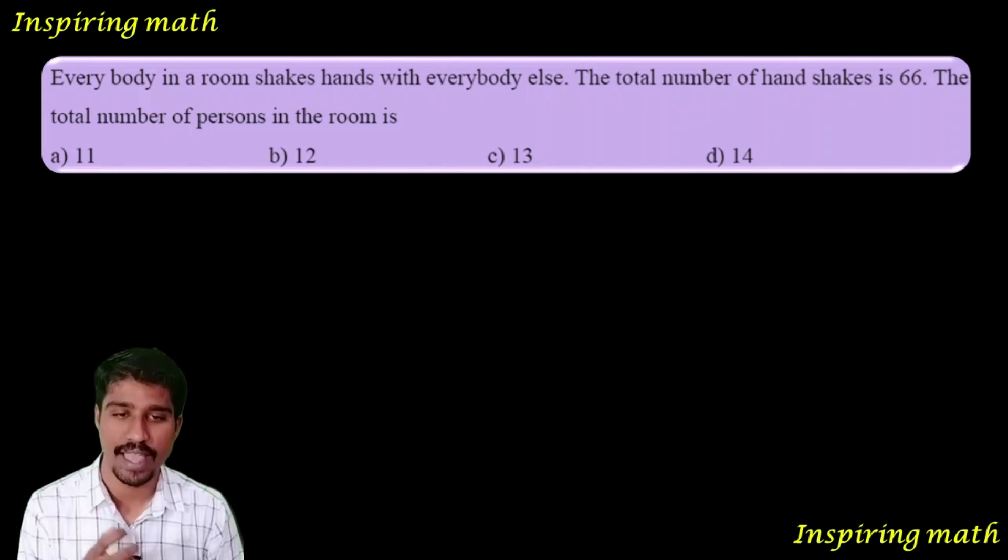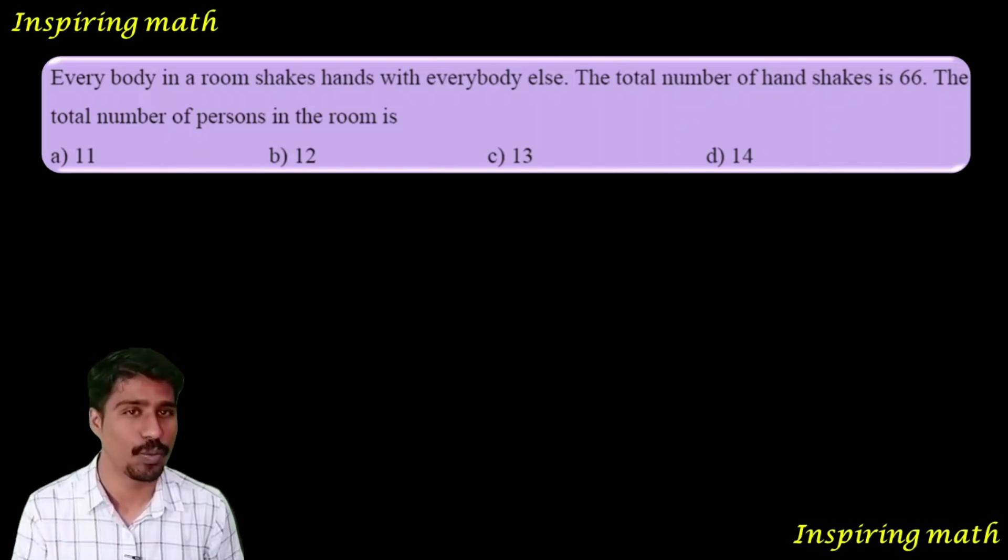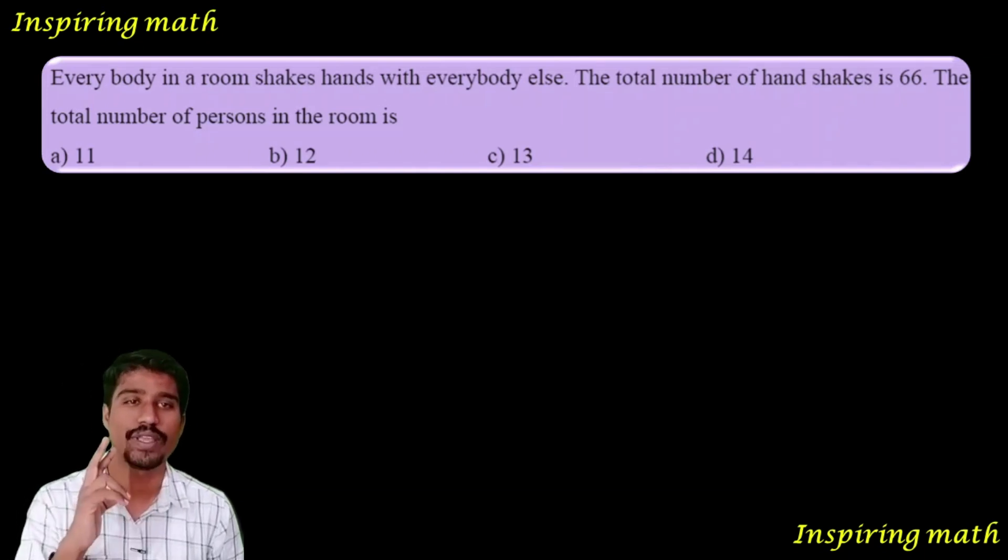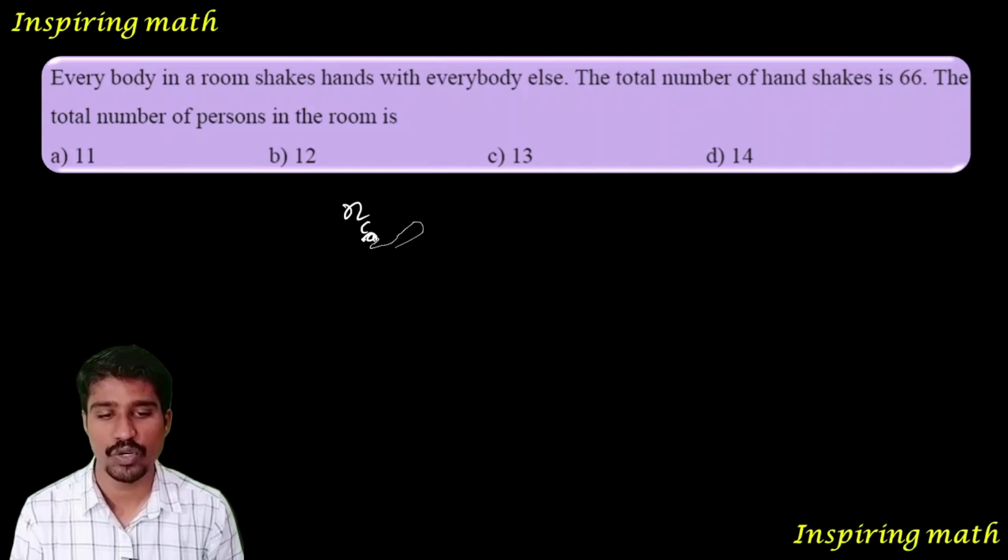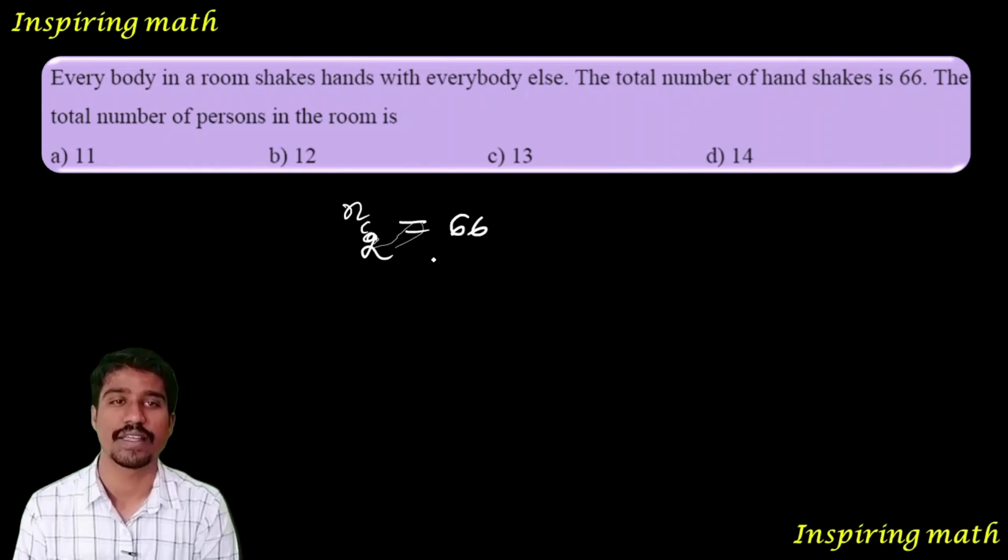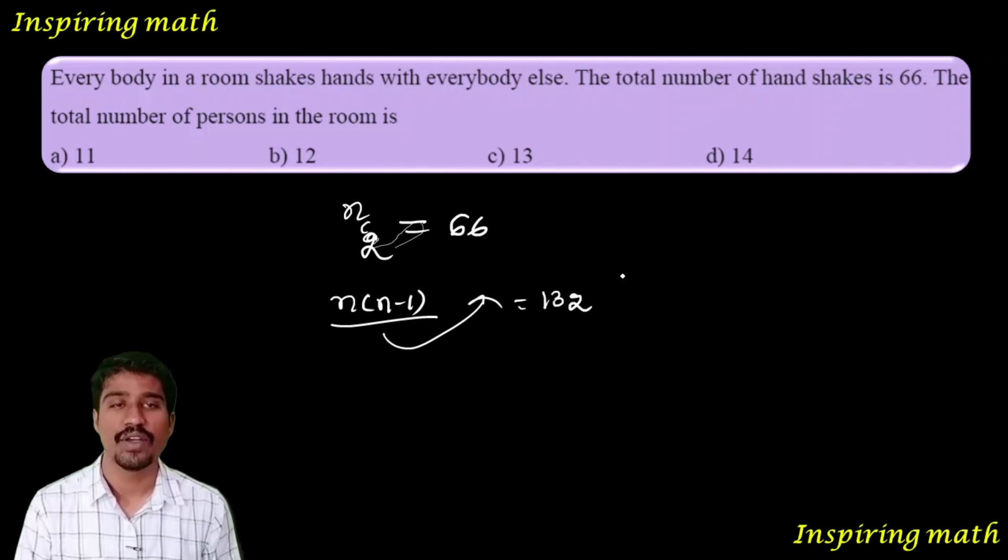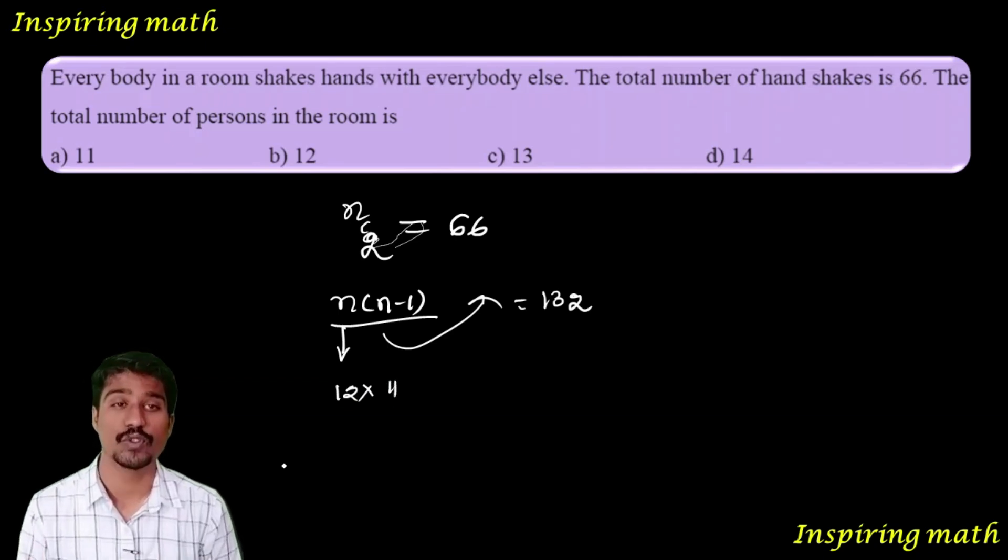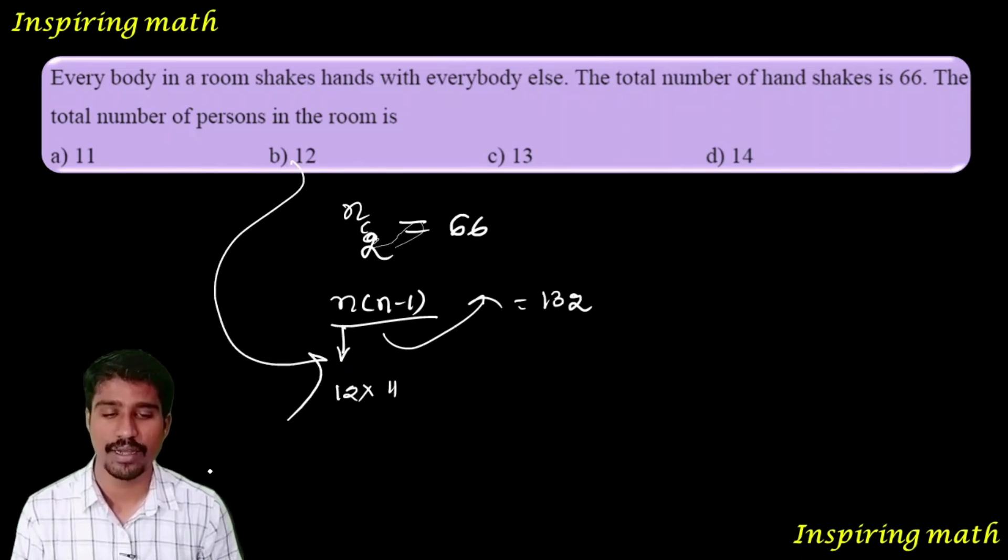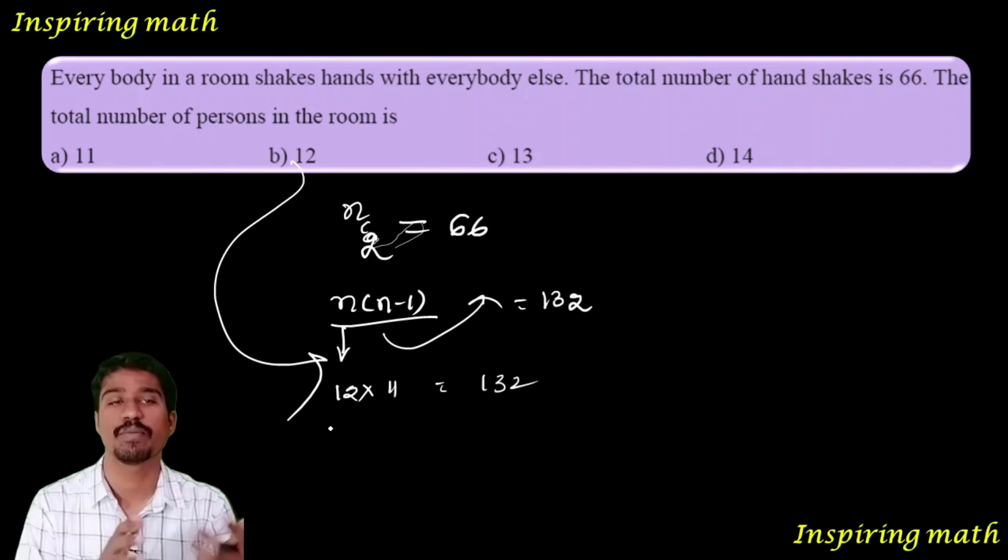Everybody in a room shakes hands with everybody else. The total number of handshakes is 66. Then the total number of persons in the room: nC2 equals 66. nC2 can be written as n into n minus 1 divided by 2. So 132 is your answer. 12 into 11 gives 132, so n equals 12.